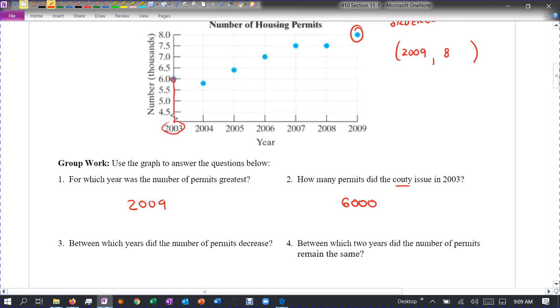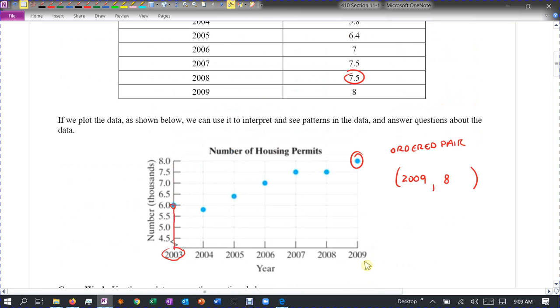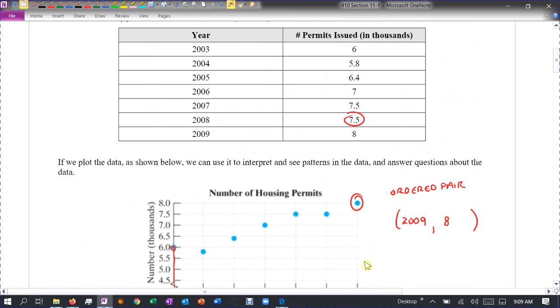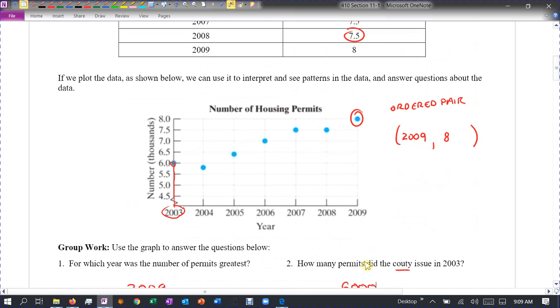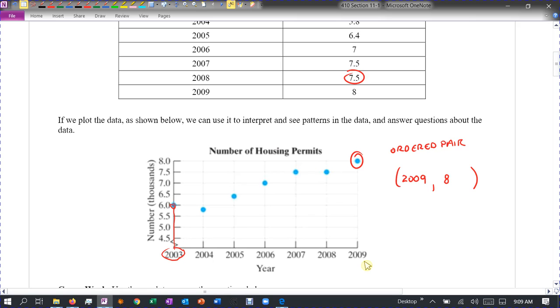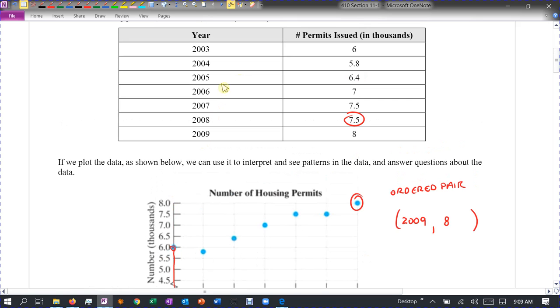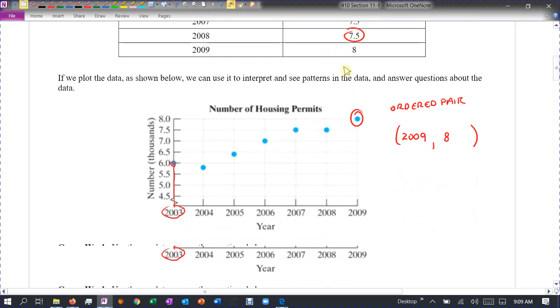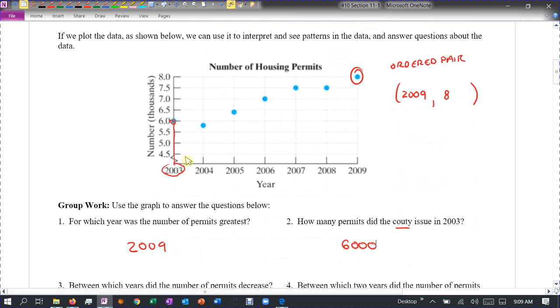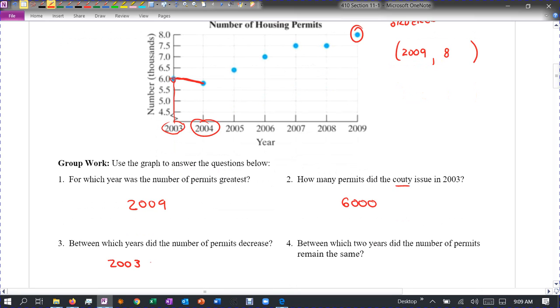Between which years did the number of permits decrease? It looks like between 2007, let me see. Well, I don't think we ever decreased, did we? Oh, yeah, in the very beginning, 6,000 and then 5.8,000. So between the years 2003 and 2004, it had a slight decrease there. So 2003 to 2004.